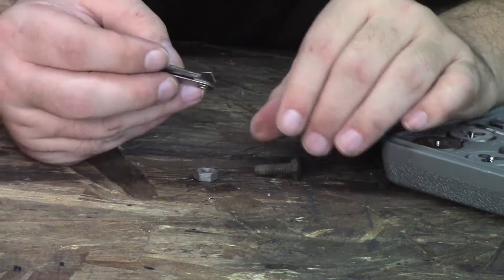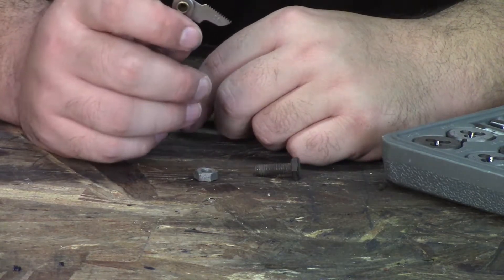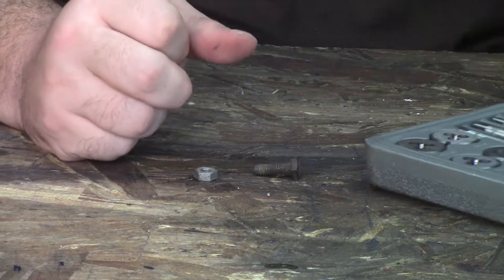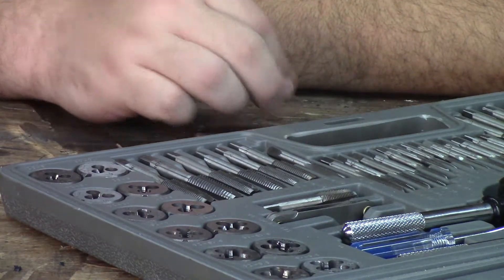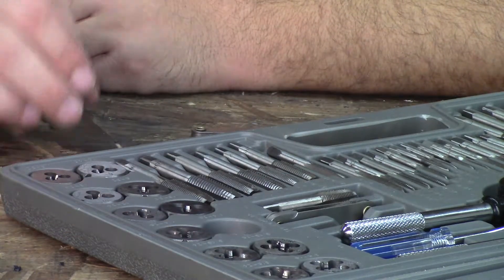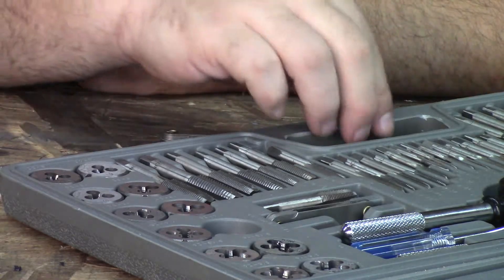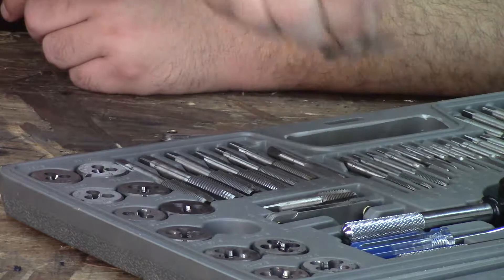Then you look on your gauge - this is a 20 - and go over to the tap and die set to find the quarter-inch 20. That's the die. Looking through the taps, here's the tap.